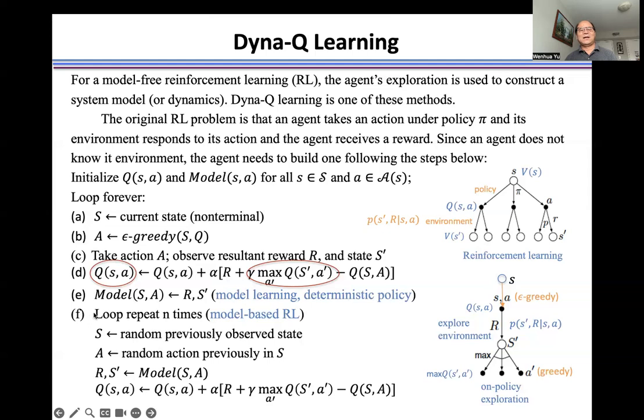That means even, for example, give a new case, a new state s and the new action. We can use this model to evaluate, to learn this Q value. This Q learning just uses exploration. This creates a model, and this is the model we need. Because we can use a model-based reinforcement learning to learn Q value.